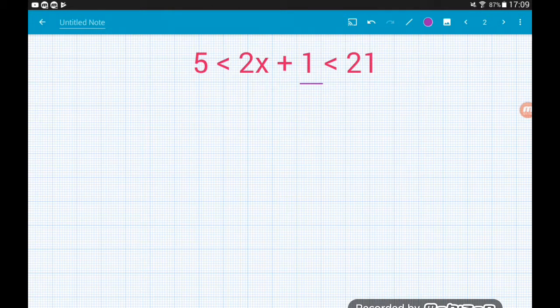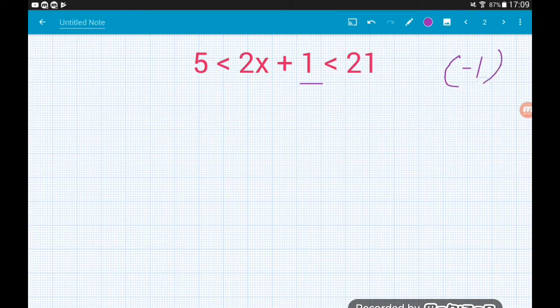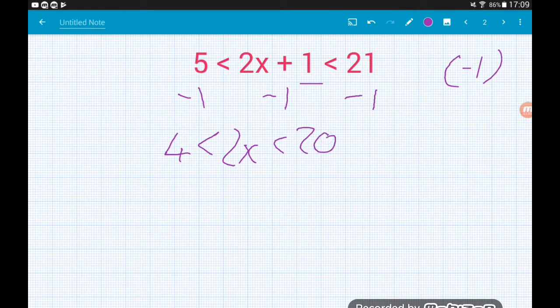And that's exactly our first step when we're playing with this type of question. So we're going to take away 1 but instead of thinking of it as taking away 1 on both sides, we're taking away 1 from each part of the three parts of the inequality. So we take 1 away from 5, we take 1 away from 2x plus 1, and we take 1 away from 21. So that will change our inequality to 4 is less than 2x, which is less than 20.